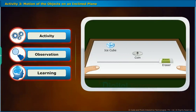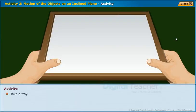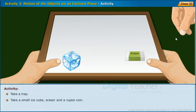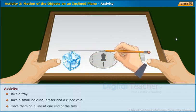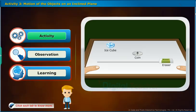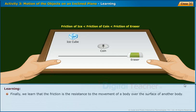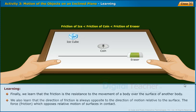Now let us perform an activity to observe motion of objects on an inclined plane. Take a tray. Take a small ice cube, a razor, and a rupee coin. Place them on a line at one end of the tray. Now slowly lift this end of the tray and observe their motions. We observe that the ice block reaches first, the coin reaches later, and finally the rubber reaches the ground level. We learn that friction is the resistance to the movement of a body over the surface of another body. The direction of friction is always opposite to the direction of motion relative to the surface.